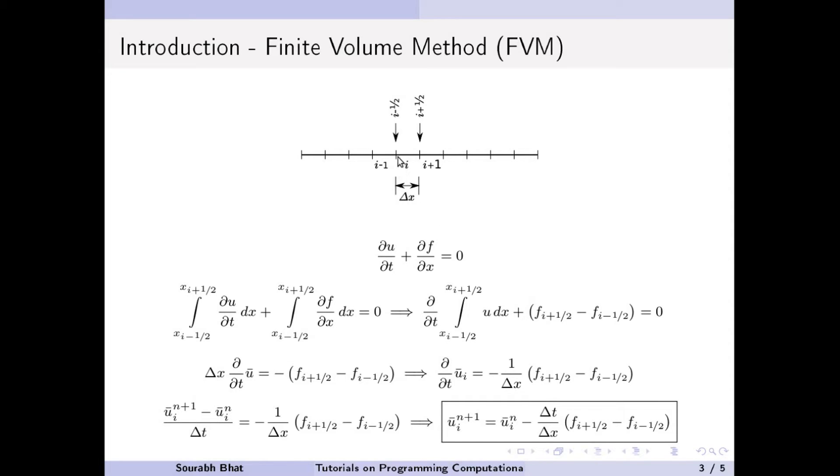In case of finite volume methods, especially in 1D, we consider each of these as a cell which is basically the discretized form of the complete domain. Let's say that this cell is of delta x and the ith cell begins at i minus half and ends at i plus half. So this is the equation that we are going to solve. This is the partial differential equation which is the general form of flow equation in our case.